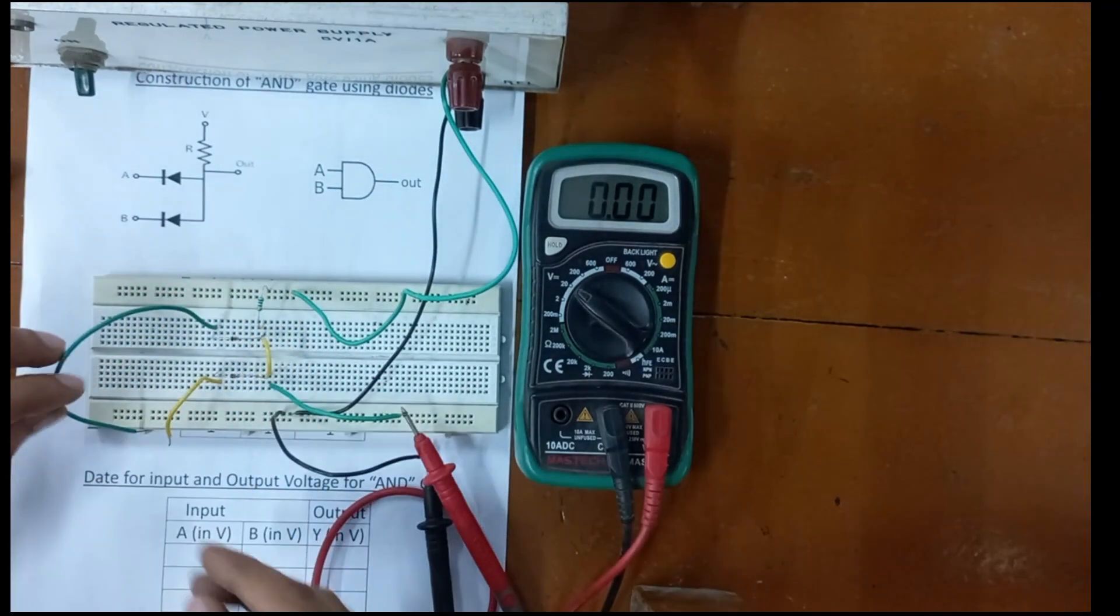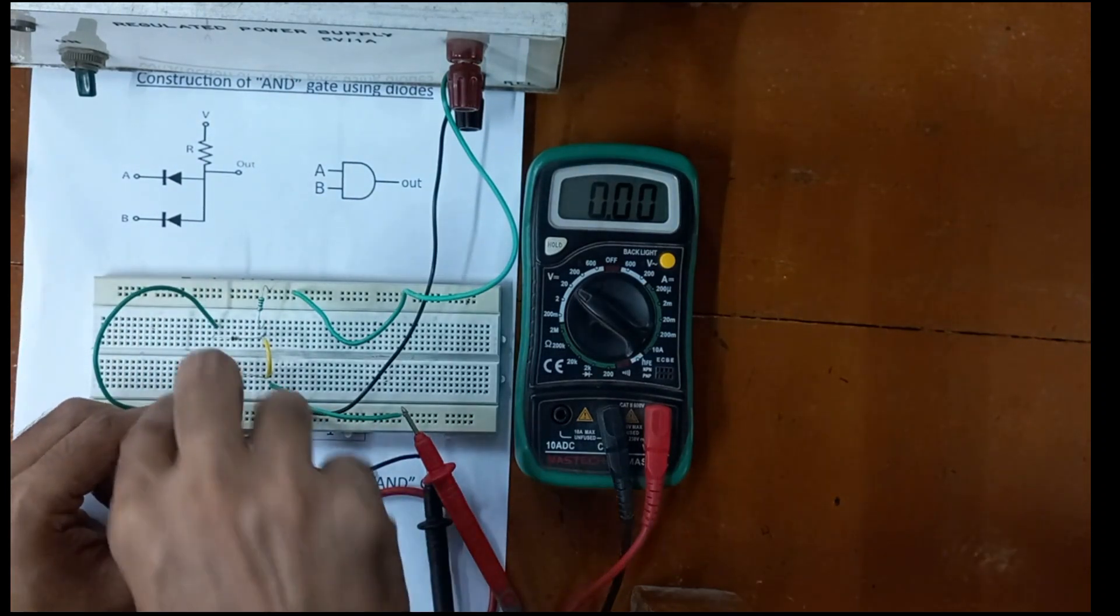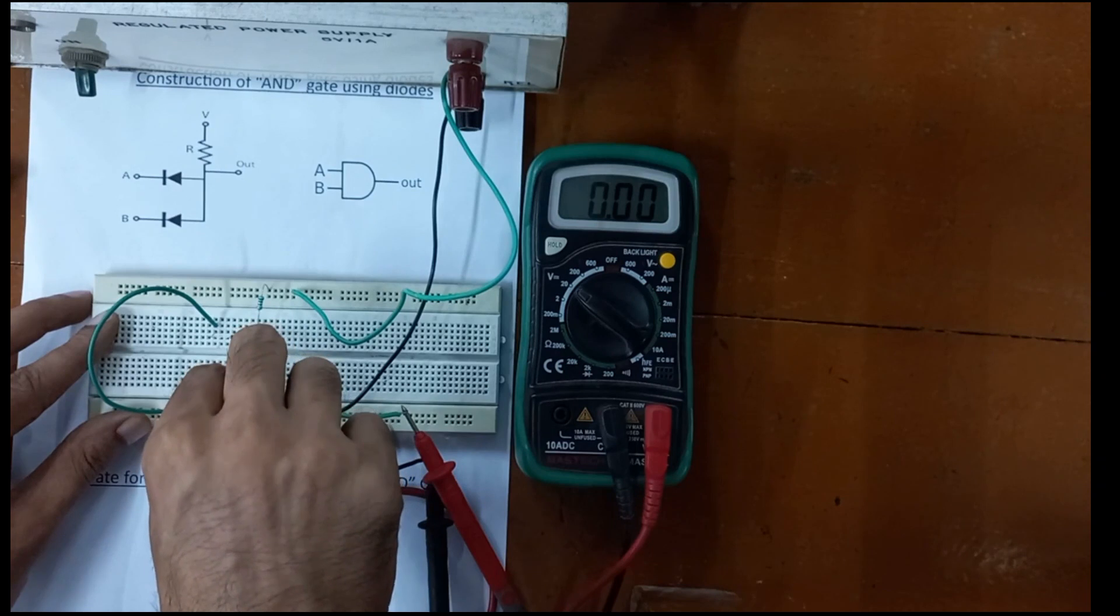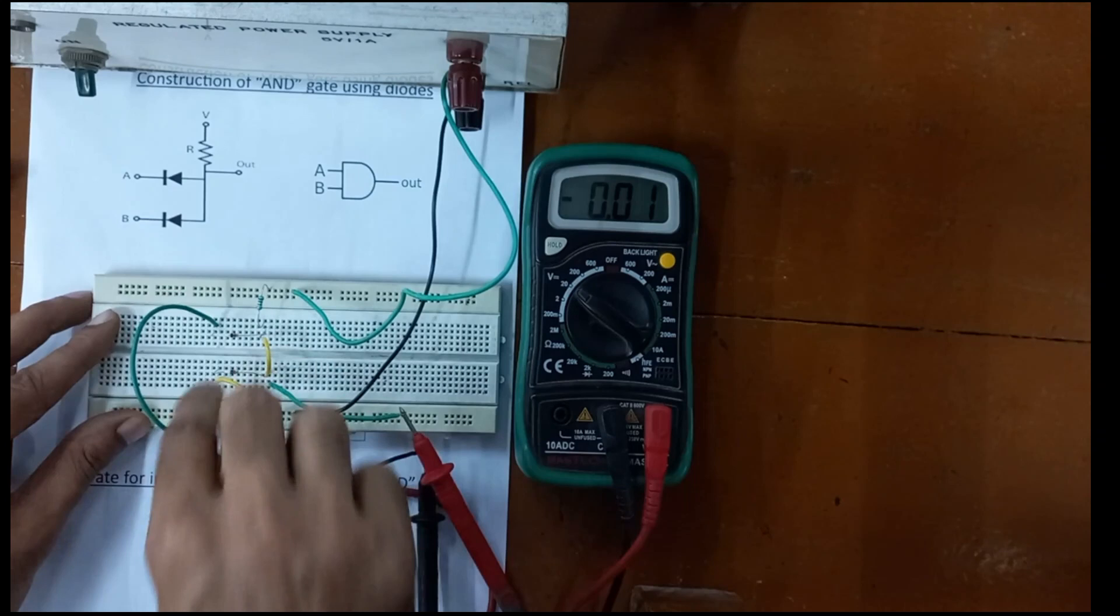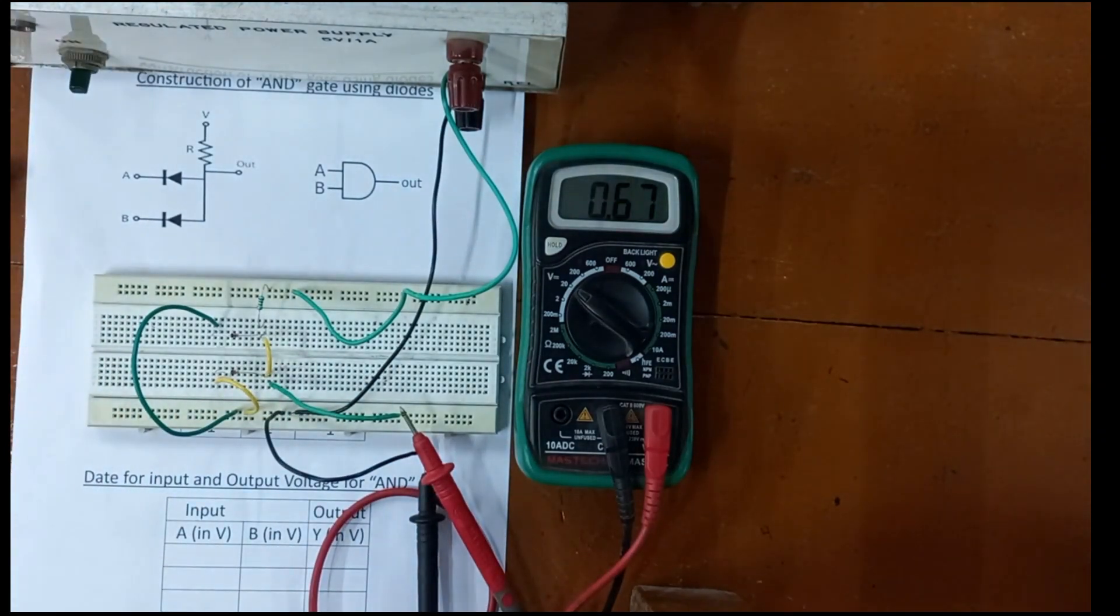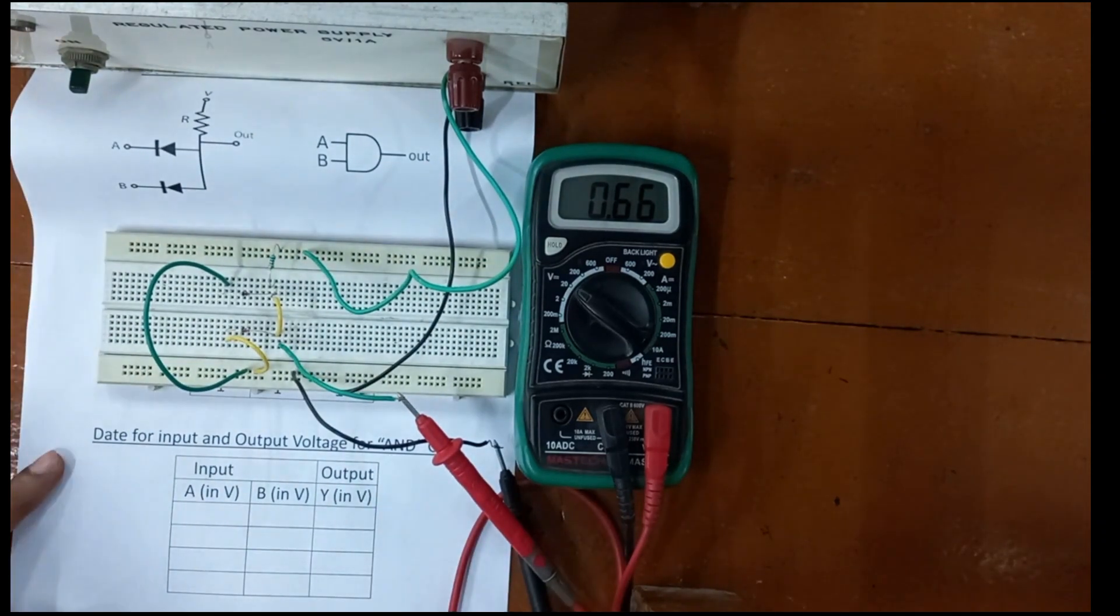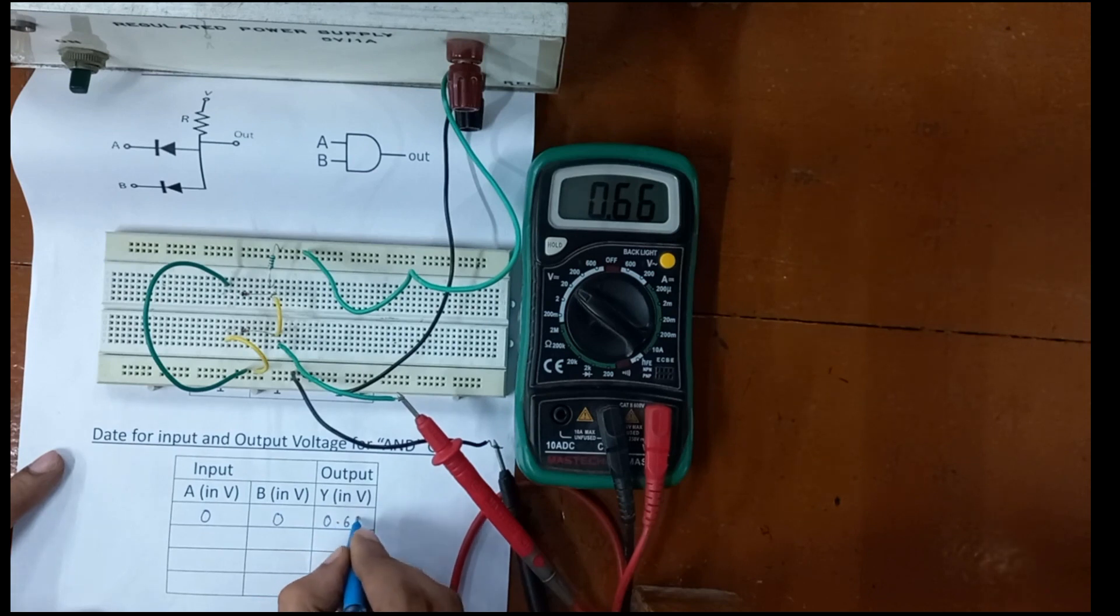Now let's connect both inputs A and B to low voltage, that is 0 volt. Switch on the power supply and look at the output reading. When the input voltages A and B are zero, the output voltage is 0.66 volt. To verify the AND gate, we make this table: input voltage is 0, 0 and output voltage is 0.66.